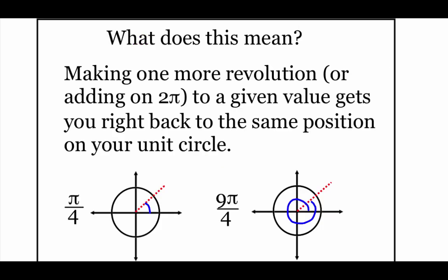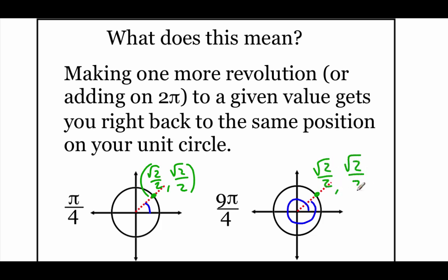What does that mean for this trig stuff? We've been talking about the unit circle and coterminal angles. If we look at the angles pi over 4 and 9pi over 4, those are coterminal — they both start and end in the same place, but one angle is bigger. Even if we make that one extra full rotation around, the ordered pair ends up being exactly the same: root 2 over 2 and root 2 over 2.